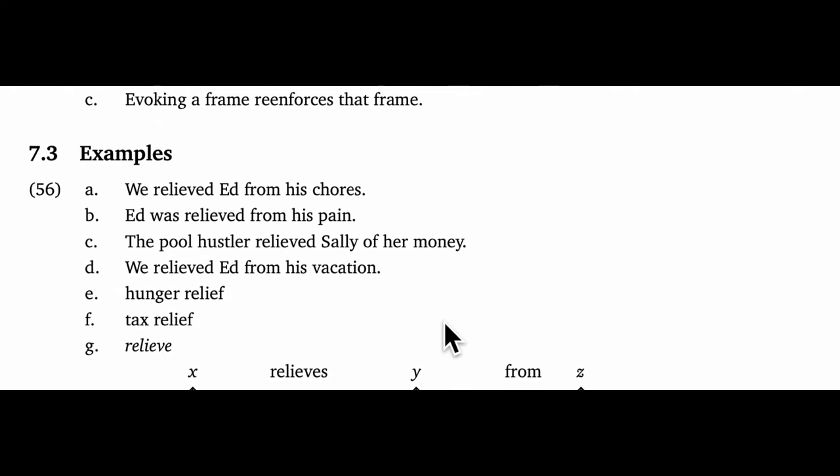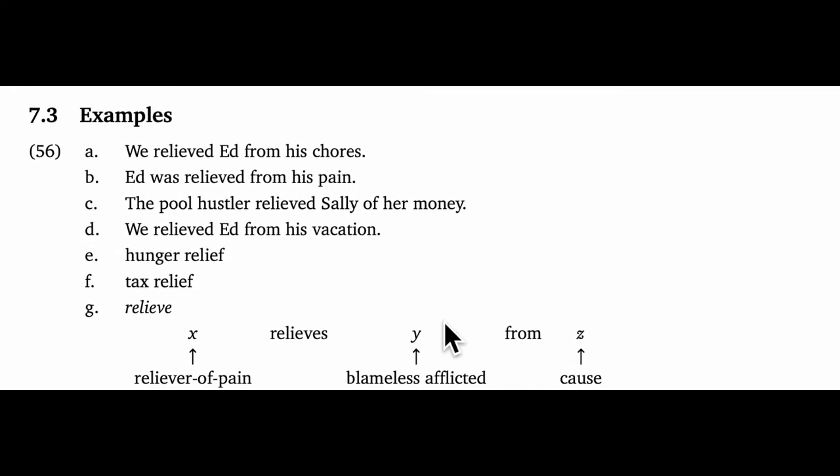Let's look at some examples to begin to suggest how wide-ranging this might be. Consider sentence 56a, we relieved Ed of his chores. In framing theory, we might break that down into the frame given informally in G. The idea is that whenever relieve is used, it will bring along this frame as a kind of deep presupposition.